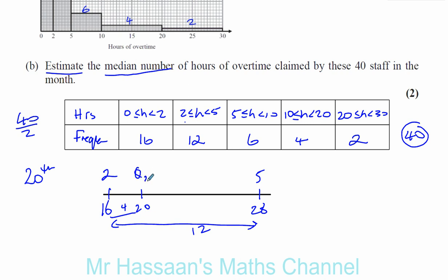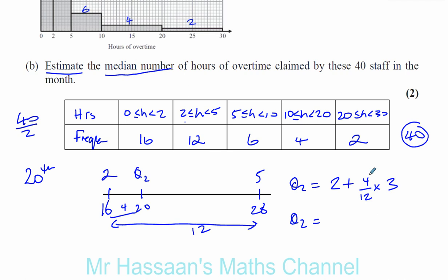We want to find this value, which we call Q2, the median — Q2 is the symbol given for the median. So Q2 is going to be 2 plus a fraction. We want to know what fraction of the length between two and five the median lies at — that's the same fraction that 20 lies along this group, which is 4 over 12. So you have 4 over 12 times the width of the group, which is 3 hours. That gives us 4 over 12 equals one-third; one-third times 3 is 1, so it's 2 plus 1, which is 3 hours. So the median Q2 is equal to 3 hours.